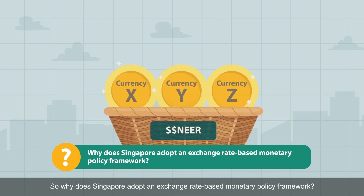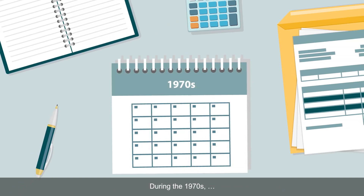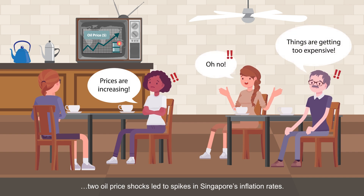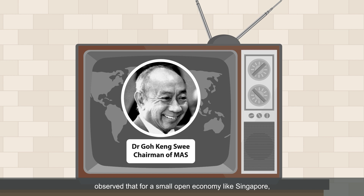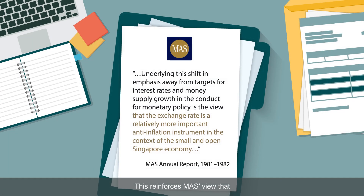So, why does Singapore adopt an exchange rate-based monetary policy framework? During the 1970s, two oil price shocks led to spikes in Singapore's inflation rates. As such, the late Dr. Goh Kang Sui, our former deputy prime minister and chairman of MAS, observed that for a small open economy like Singapore, targeting the exchange rate would be more effective than adjusting money supply or interest rates in protecting Singapore from inflationary pressures from abroad. This reinforces MAS' view that the exchange rate is a relatively more important anti-inflation instrument for Singapore's economy.